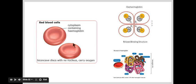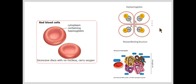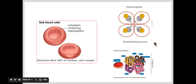Here we can see the general shape of a red blood cell. They are biconcave, which means they dip inwards towards the middle on both sides — if we were to flip it over, it would be the same on the other side. They look a bit like a donut that hasn't had the hole in the middle punched out. In the top corner we can see the generalized structure of a hemoglobin molecule with its four heme groups and four oxygen molecules attached — one oxygen molecule to each of the four heme groups.